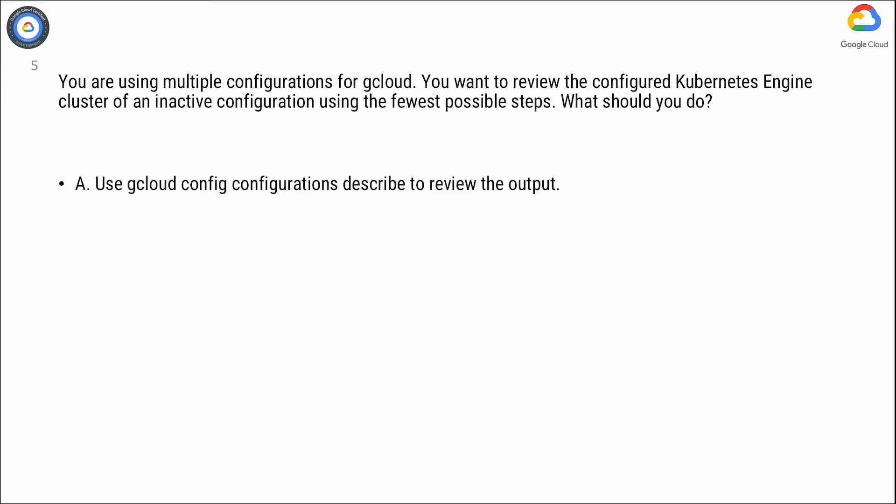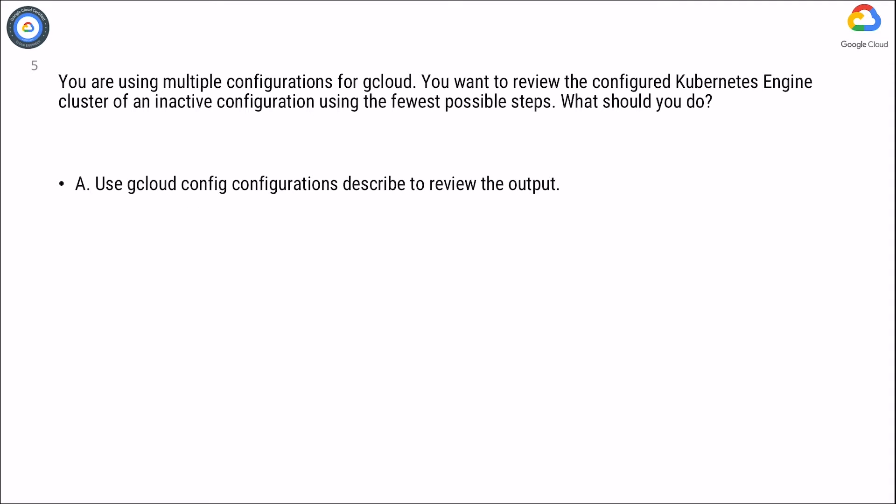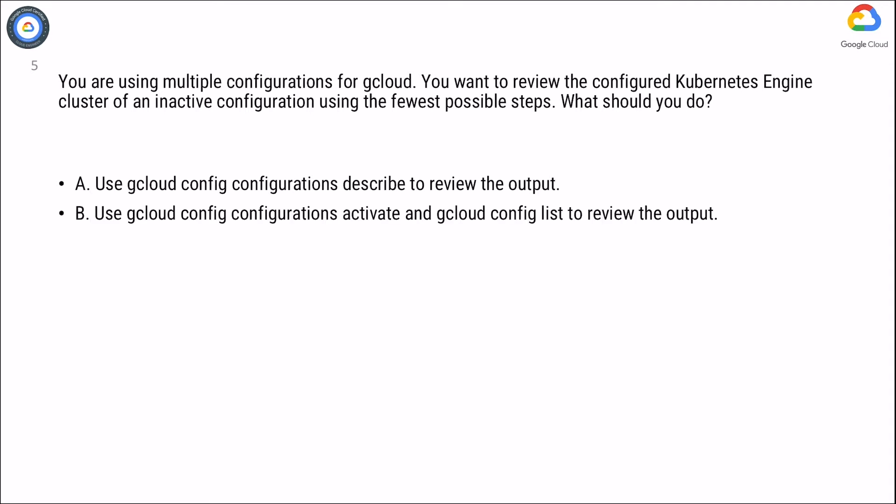Option A: Use G-Cloud config configurations describe to review the output. Option B: Use G-Cloud config configurations activate and G-Cloud config list to review the output.